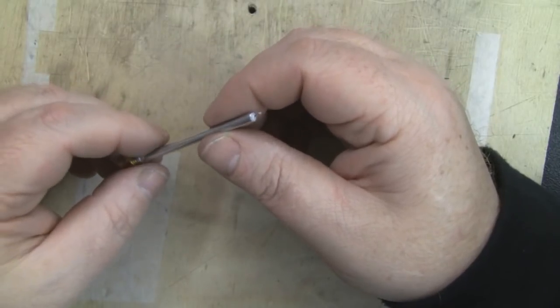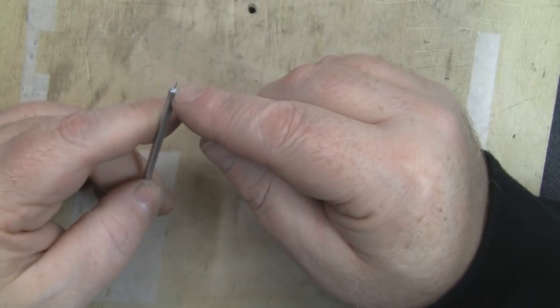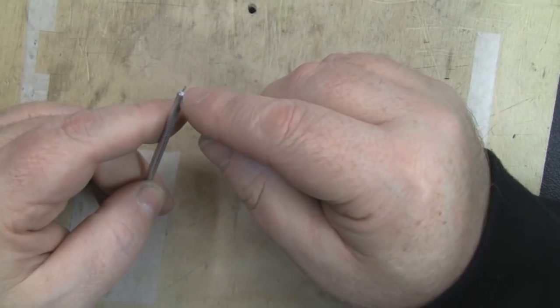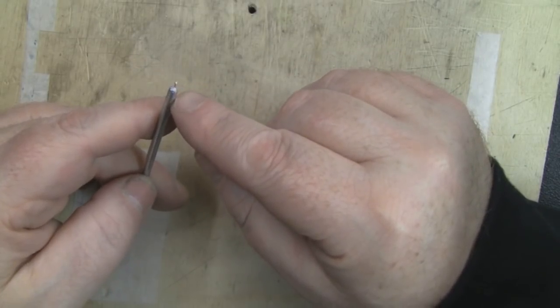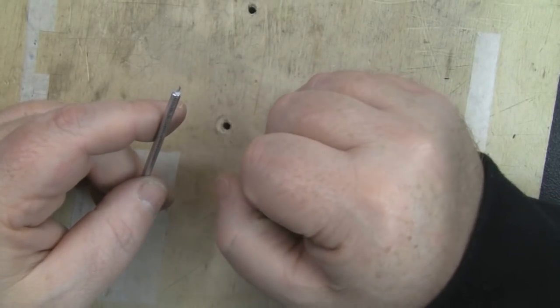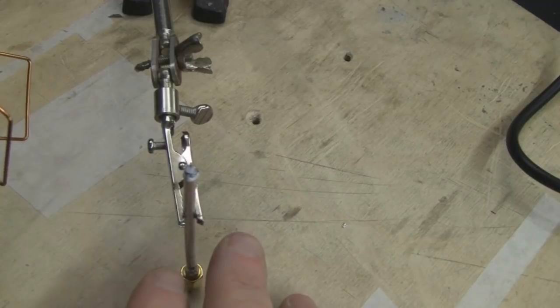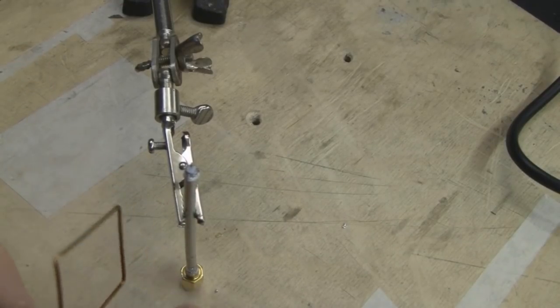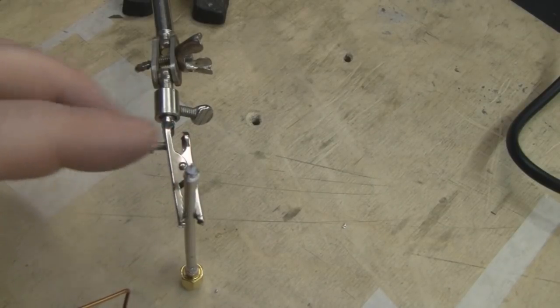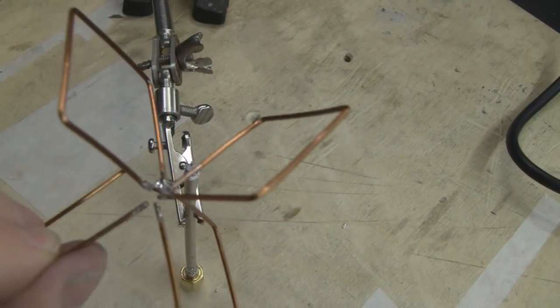I've got a length of coax here that I'm going to prepare ready to solder on the elements. I've cut the outer braid back here to expose 3mm of the inner core. You want to try and aim for a gap of about 3mm. What I'm going to do is put some solder around the side of this outer braid here at the top, and a little bit of solder on top here because that's where we're going to attach our element to.